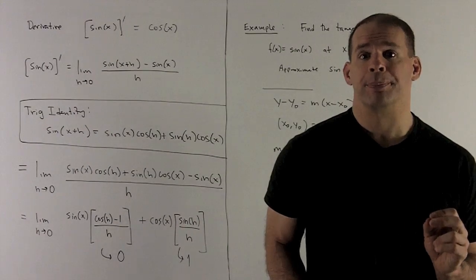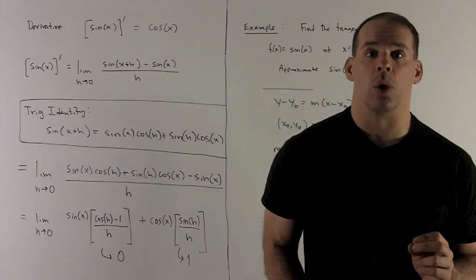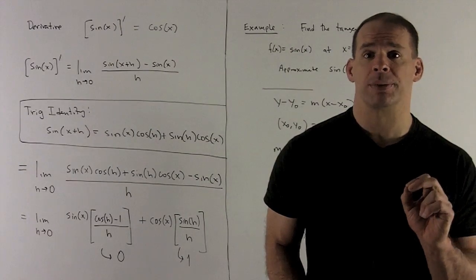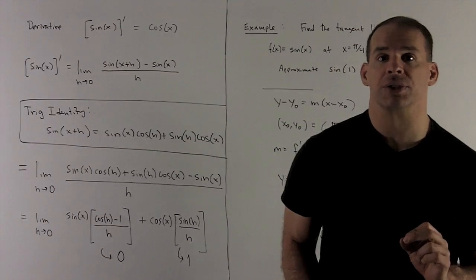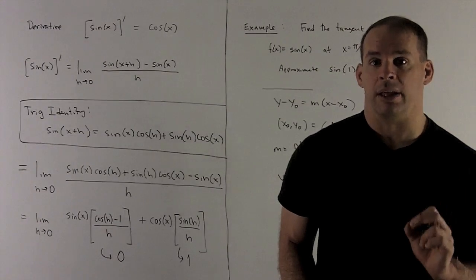Once I have that, put that back into our quotient. We want to collect those sine x terms. That's going to give me this gadget, cosine h minus 1 over h.